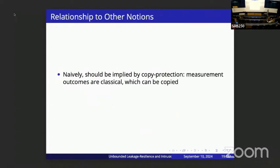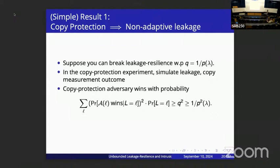Regarding the relationship of LOCC leakage resilience to previous notions: naively it might look like it should be implied by copy protection, since measurement outcomes are classical and can be copied. In the copy protection experiment we can simulate the leakage adversary, clone the classical leakage, and this should break copy protection — meaning copy protection should imply leakage resilience. This does work in the simple setting: unpredictable copy protection implies unpredictable non-adaptive, single-round leakage resilience.